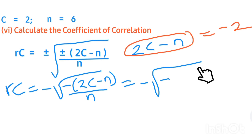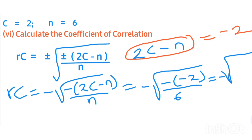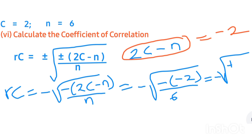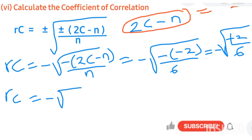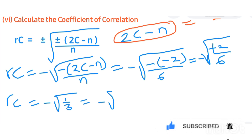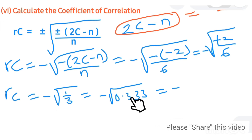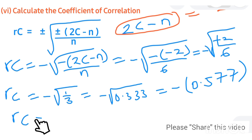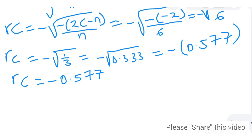Substituting the values: 2C minus n gave minus 2, so we have minus square root of minus 2 over 6. Since minus times minus is plus, we have plus 2 over 6. Simplifying, 2 divided by 6 gives 1 over 3, which equals 0.333. The square root of 0.333 gives 0.577. Therefore rc equals minus 0.577.